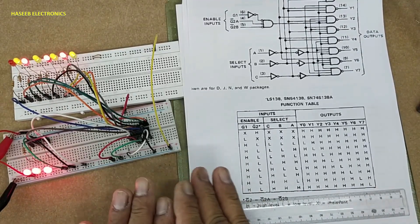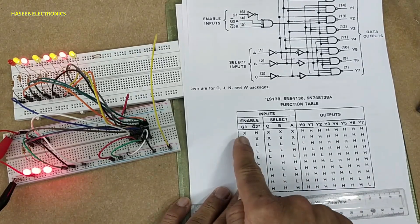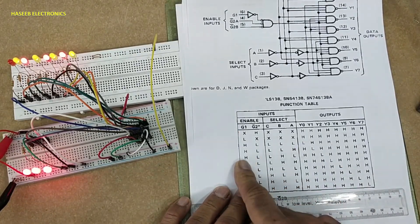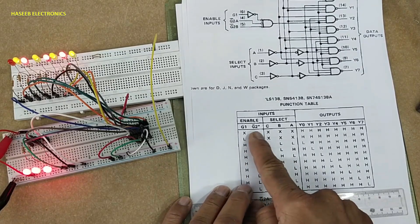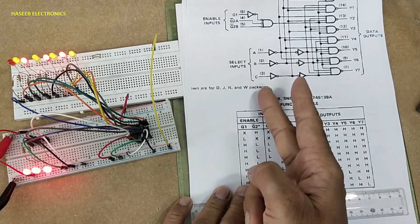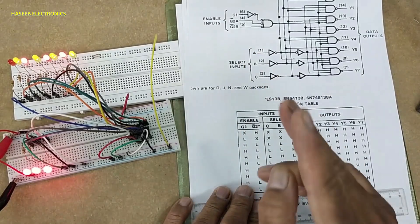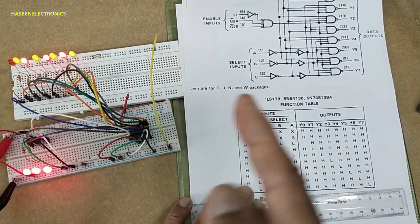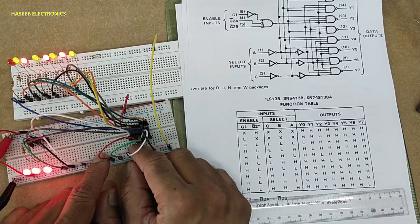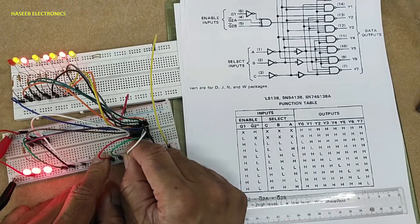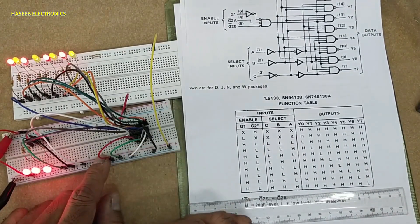When G1 is high and G2 bar—both pin four and five—are low, this IC will start functioning. If at any time G1 pin number six is low, no address change will work on the output side.